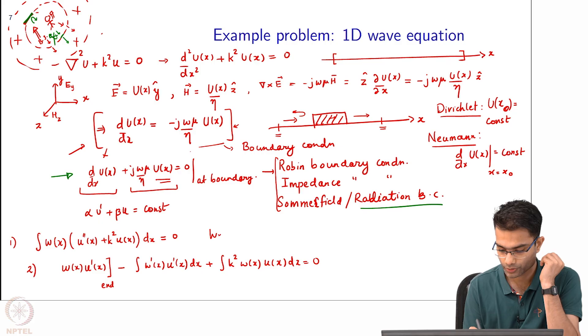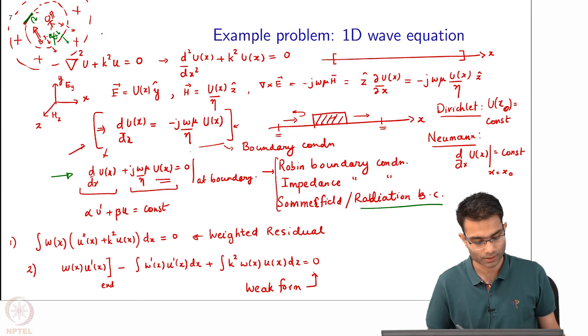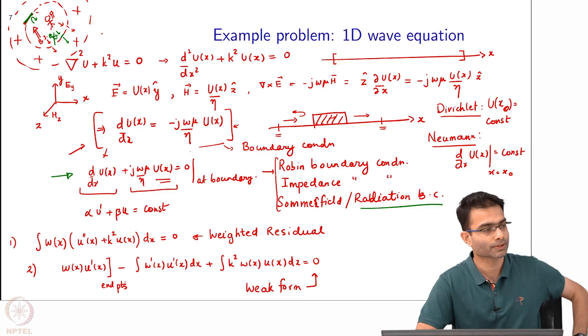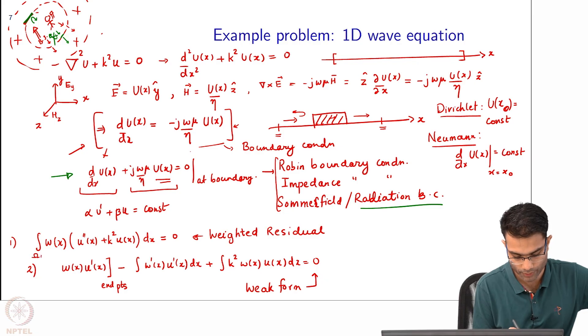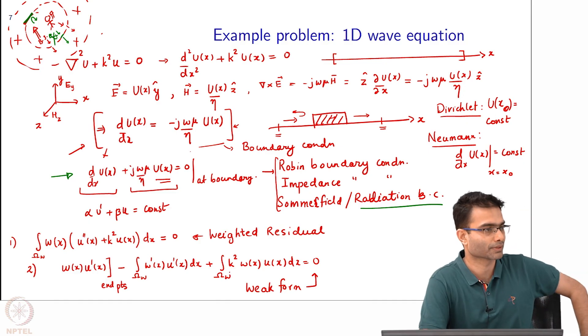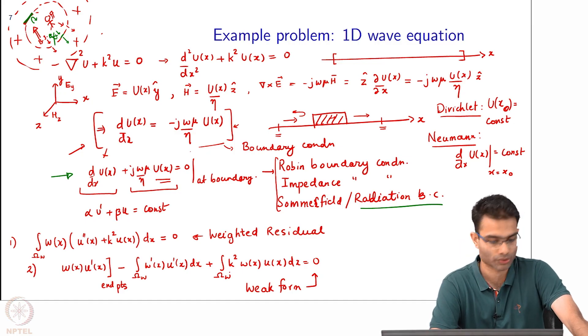This was weighted residual and this is - as we discussed earlier, this weak form is useful because it involves only first order derivatives. I have not put the limits of integration, but they correspond to the domain of w, that is implicit. So now, let us proceed further. Let us now put in - now what is it that we have to choose? We have to choose w's and we have to choose u's.